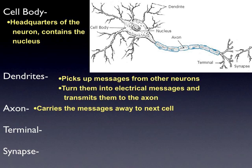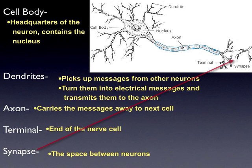The end of the axon is the terminal. The terminal is the end. Then there's a gap — the dendrites of the next nerve cell don't actually connect with the terminal. There's a space there, and the name of that space is called a synapse.